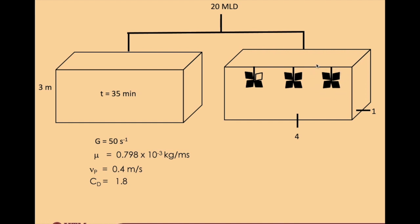We are not interested in the total area of plates, because the question asks us to find out the area of one plate. So if you use that equation and get the value for AP, do not forget that it actually corresponds to all 12 plates. So you have to divide by 12 in order to get the area for one plate.